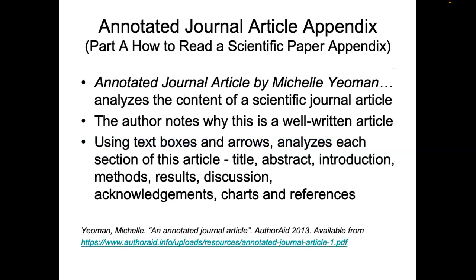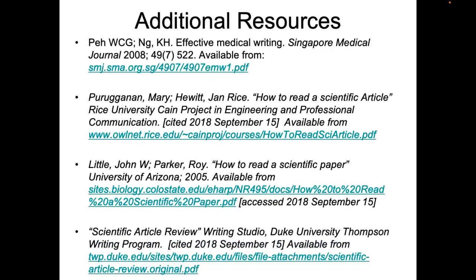You can also try annotating journals — as Yeoman, a researcher and scholar, demonstrated. Note why a particular article is well written. Use boxes or arrows to analyze each section: title, abstract, introduction, method, results, discussion, acknowledgement, charts, and references — everything you can analyze and learn from. For more learning, you can refer to additional sources to gain knowledge about how to read a scientific paper and enhance your understanding. Thank you for listening — hope you liked the presentation, please subscribe to the channel and share the video with your friends.